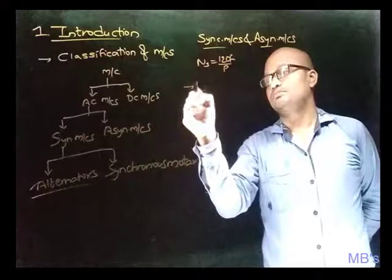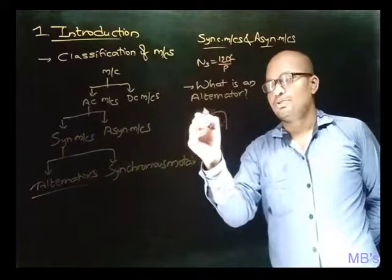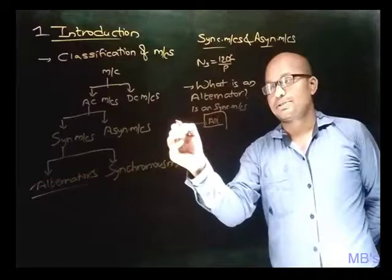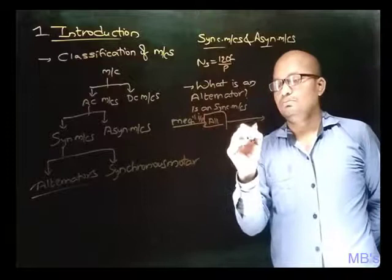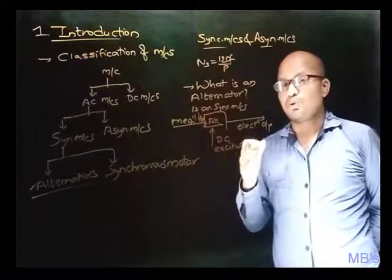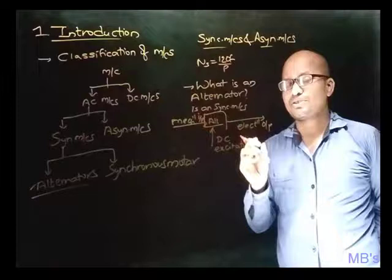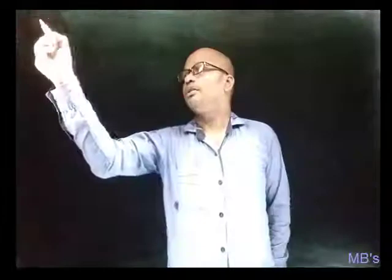What is an alternator? An alternator is a synchronous machine that converts mechanical energy input to electrical energy output with the help of DC excitation. Simply put, an alternator is an AC generator. All home electrical appliances and industrial machines need AC electrical energy as input for their functioning, and although there are DC applications, they are very limited — so most machines need AC electrical energy.